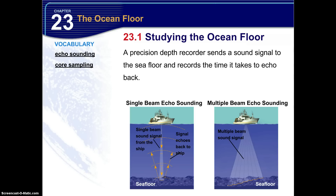Let's say that after emitting a sound signal, the ship receives an echo in six seconds. In seawater, sound travels about 1,500 meters per second. What is the water's depth? A common mistake is to take six and multiply it by 1,500, which gives 9,000 meters. But remember, it only took three seconds for the sound signal to reach the ocean floor — we don't want the round trip distance, just from the ship down to the sea floor. So the actual answer is 4,500 meters.